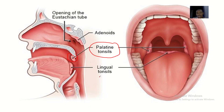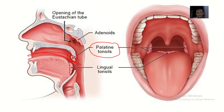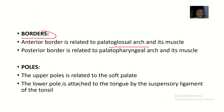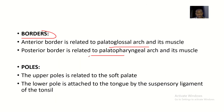This small structure — the palatine tonsil — is what we are talking about. It is important because food that you are eating is passing and touching the palatine tonsil. Now, what are the borders of the palatine tonsil? Anteriorly, it is related to the palatoglossal arch and its muscles. Posteriorly, it is related to the palatopharyngeal arch and its muscles.